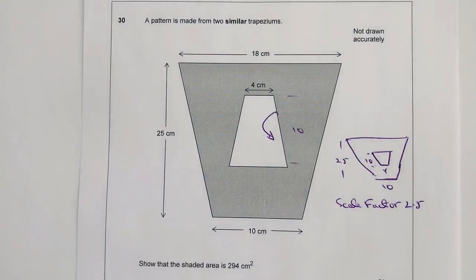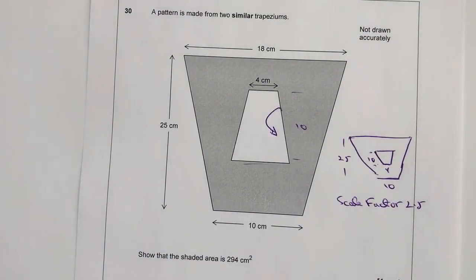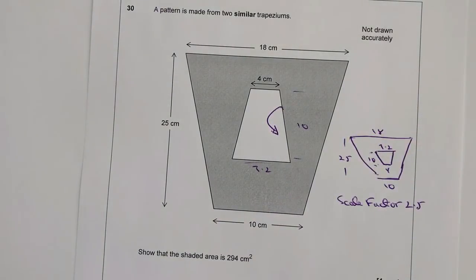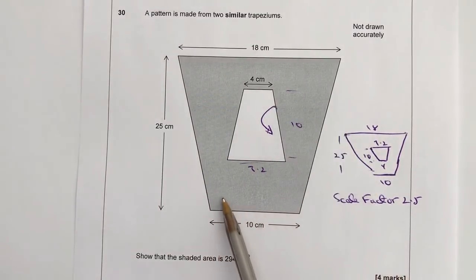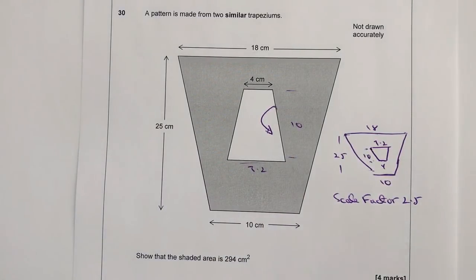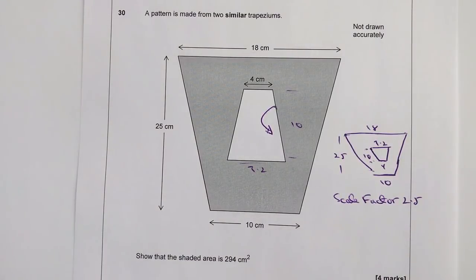And then finally, I'll also need the measurements of this bit along here, which is this bit here. Now I know this is 18, and 18 divided by 2.5 means this will be 7.2, or this will be 7.2, and this will be 18. So I've got all my component parts now that I need to be able to work out the shaded area. And the way I'm going to do that is I'm going to work out the area of the large trapezium, and then I'm going to take away the area of the small trapezium, and hopefully I'm going to get an answer of 294 centimeters squared.